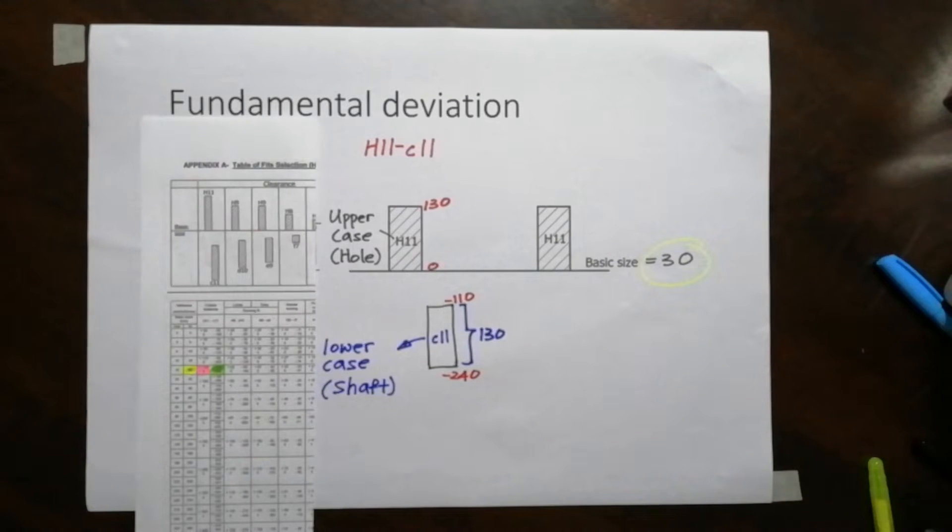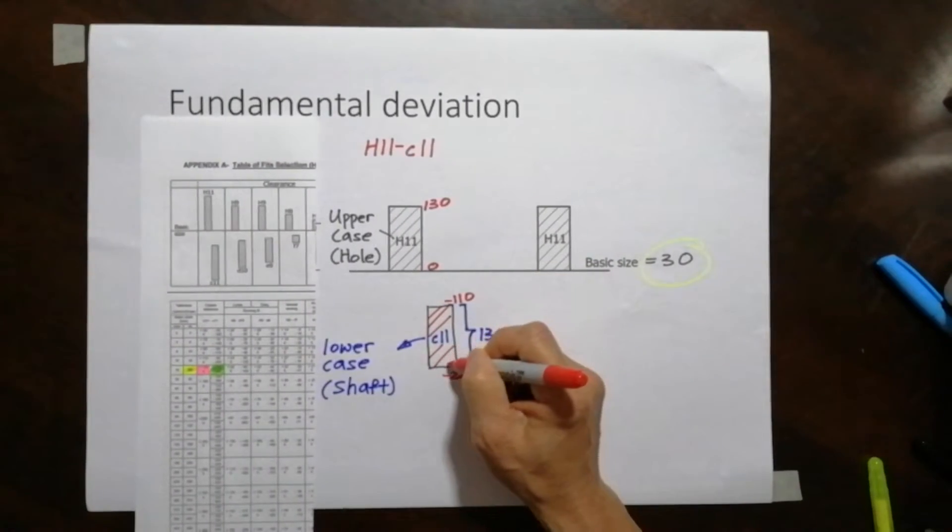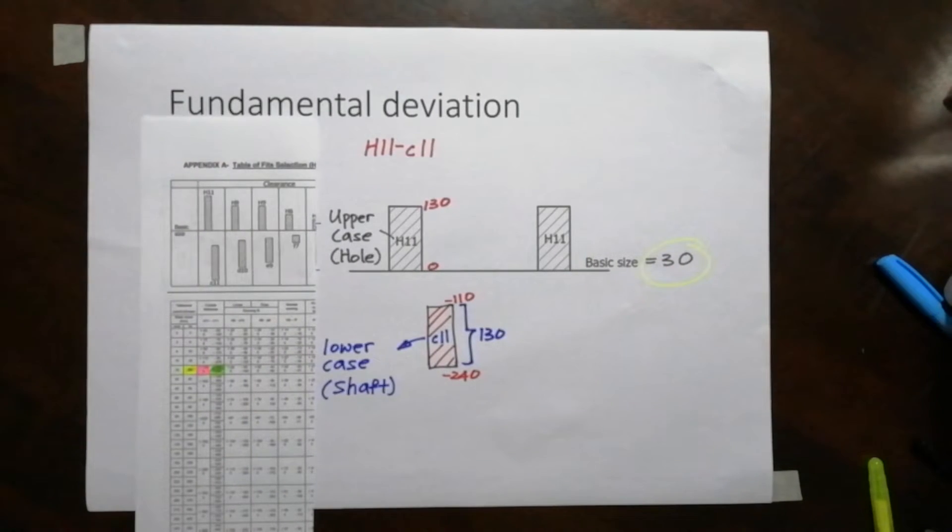And the size of the hole tolerance, let me shade it to recognize the tolerance. It's the same as the upper tolerance and it's actually 130.